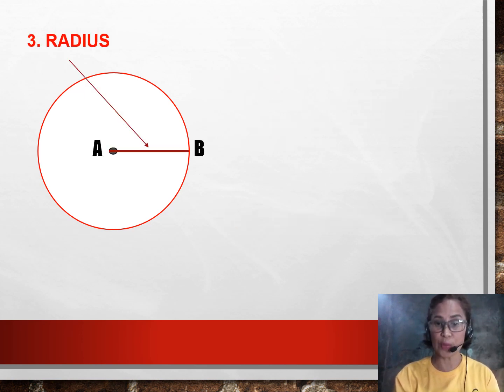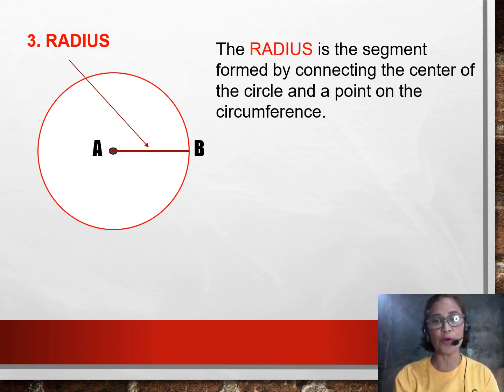Third is what we call as the radius. The radius is the segment formed by connecting the center and a point on the circumference. In this example, you can see our center is point A and the chosen point on the circumference is point B. Therefore, our radius here can be written as Segment AB or we can call it Segment BA. They mean the same.